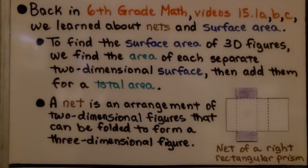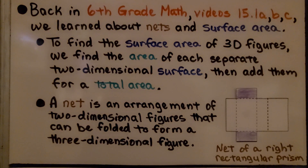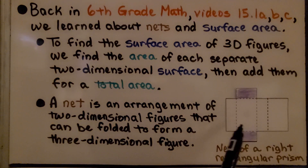Back in 6th grade math, in videos 15.1a, b, and c, we learned about nets and surface area. To find the surface area of 3D figures, we find the area of each separate two-dimensional surface, then add them for a total area. A net is an arrangement of two-dimensional figures that can be folded to form a three-dimensional figure.